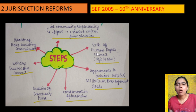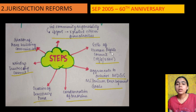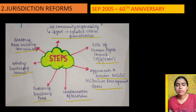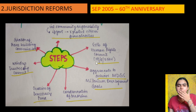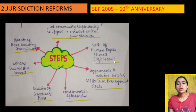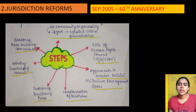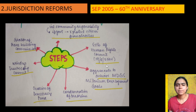Then the Human Rights Council — HRC — was established and started working in 2006. The United Nations created a new Human Rights Council.